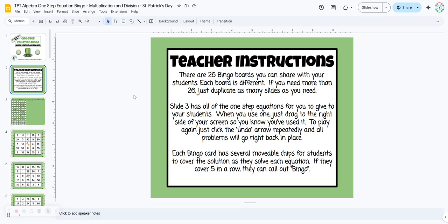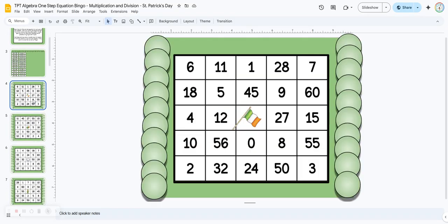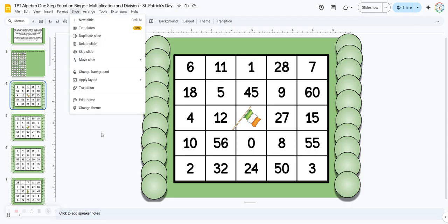The instructions are on slide 2. There are 26 different bingo boards. If you have more than 26 students, just click on one of the thumbnails on the left hand side and come up to slide duplicate. And you can duplicate as many different slides as you need.